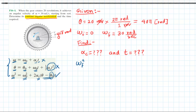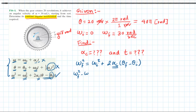Writing it out: ω_final² = ω_initial² + 2α_c(θ_final - θ_initial). Solving for constant angular acceleration: α_c = (ω_final² - ω_initial²) / (2 × (θ_final - θ_initial)).